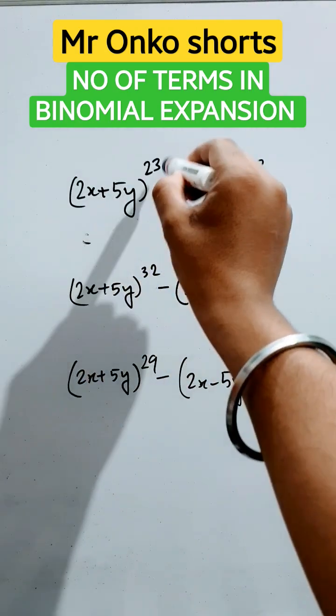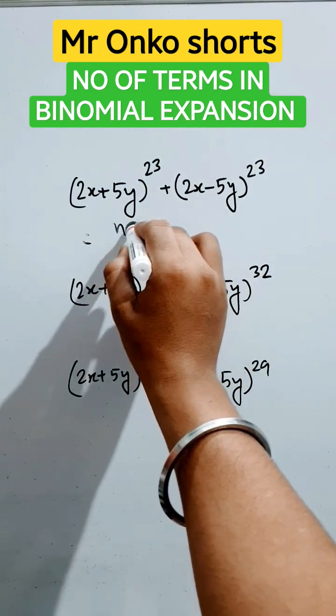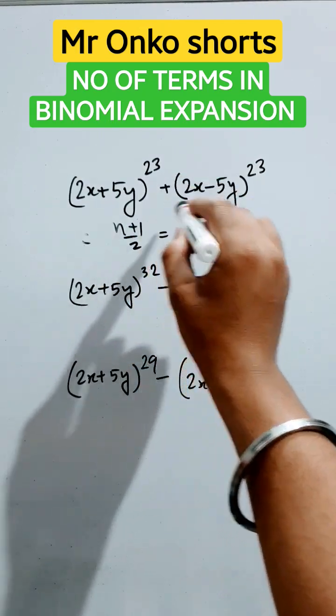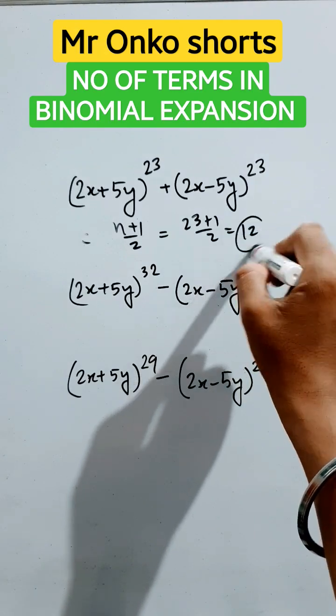If there is odd power and plus sign is in between them, we will write n plus 1 by 2 terms will be there. It will be 23 plus 1 by 2 is 24 by 2, 12 terms.